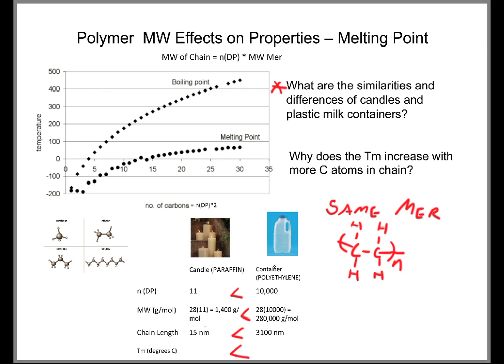Let's go to this graph up here and figure it out. This is a graph that has temperature in degrees Celsius on the y-axis and the number of carbons on the x-axis. Plotted is the melting point as a function of the number of carbons and the boiling point as a function of the number of carbons.